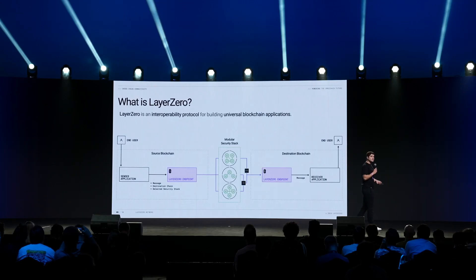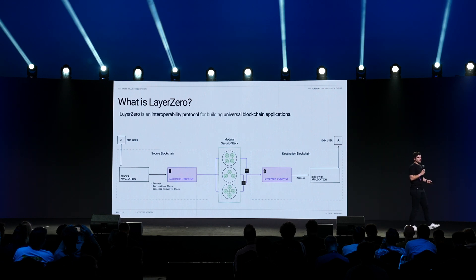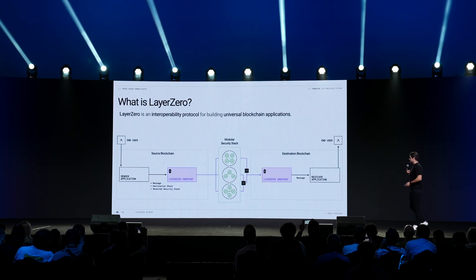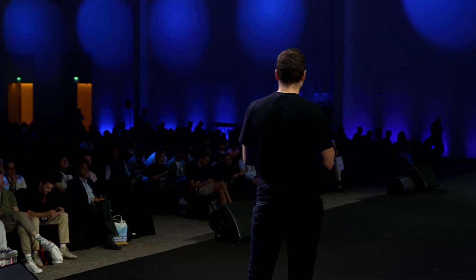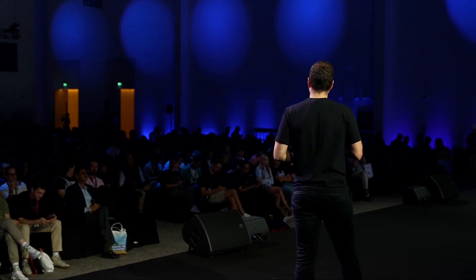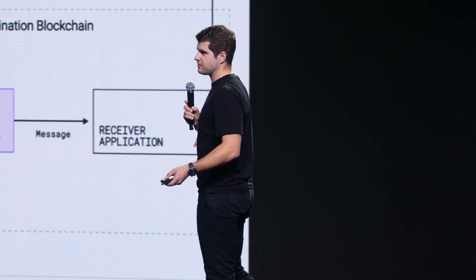So how does Layer 0 work? First, Layer 0 is not a blockchain — it's a messaging protocol, similar to something like TCP/IP, but for talking between blockchains. An omni-chain enabled application is able to communicate with a Layer 0 endpoint, which is deployed on every one of those 85 chains. They encode a message, and in that message there could be OFTs — omni-chain fungible tokens — ONFTs, which are NFTs that work on any chain, or generic data in which you want to execute complex DeFi actions on another chain.